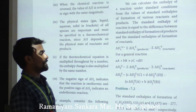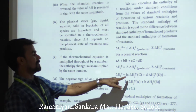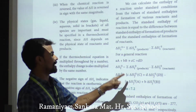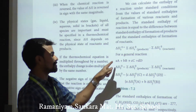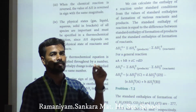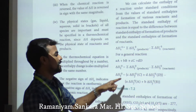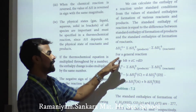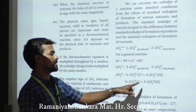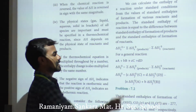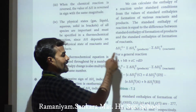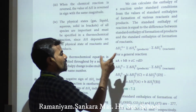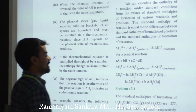The formula is: delta H = c × delta H°f(C) + d × delta H°f(D) for the product side, minus the reactant side. The small letters c and d are the number of moles of each species.